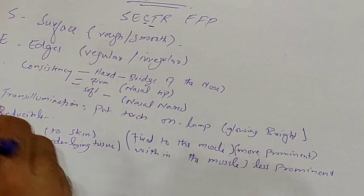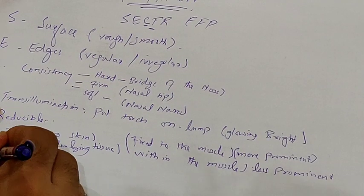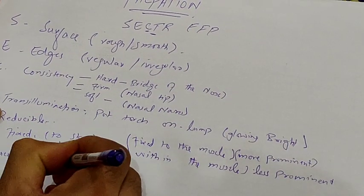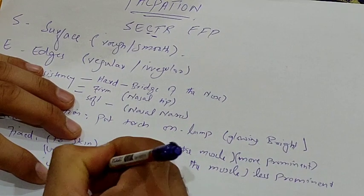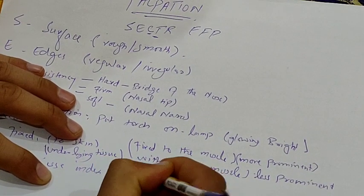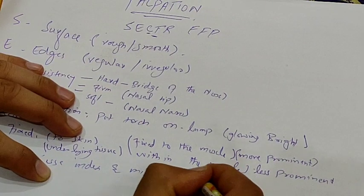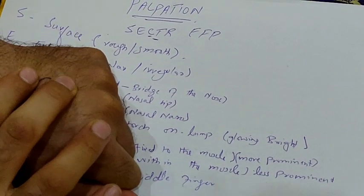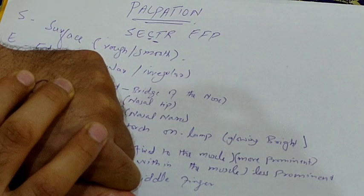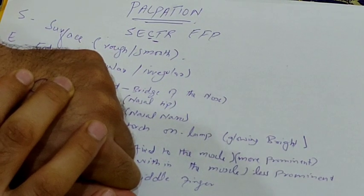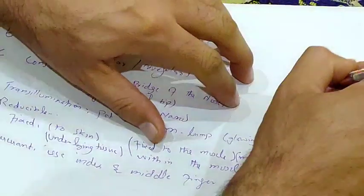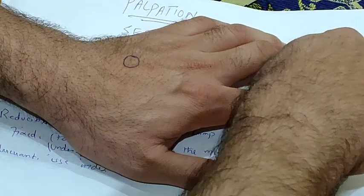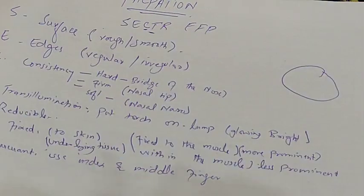The second F stands for fluctuance. Use your index and middle fingers — place them to stabilize the base and press the middle of the lump with your index finger. If the surrounding fingers bulge outward, the lump is fluctuant. This is also called a positive fluid sign or pegged sign.